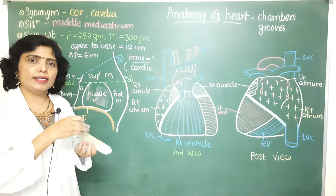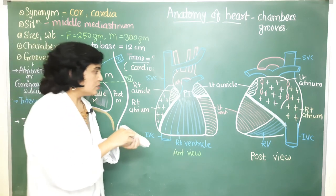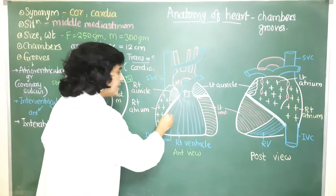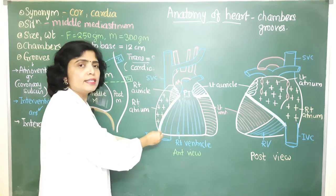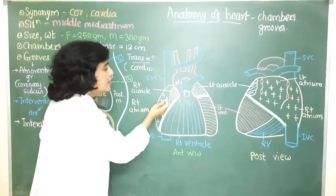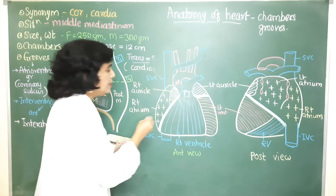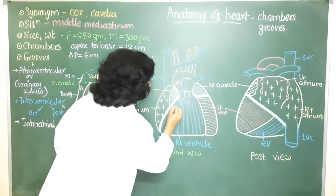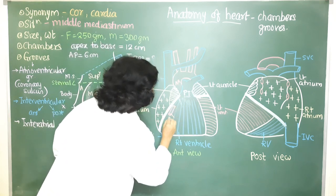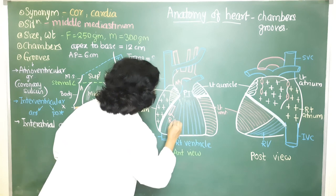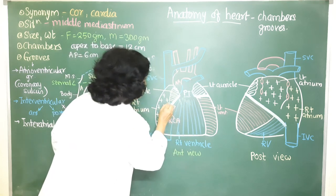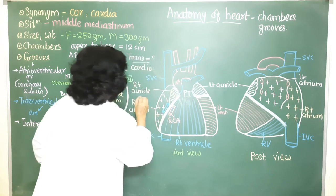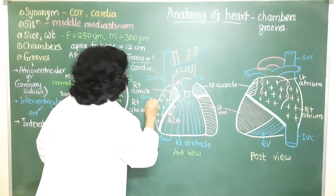The right anterior atrioventricular groove runs downwards and towards the right side. It lies between the right atrium and right ventricle and lodges the right coronary artery and the small cardiac vein.